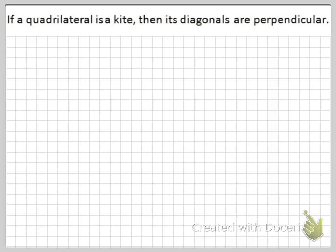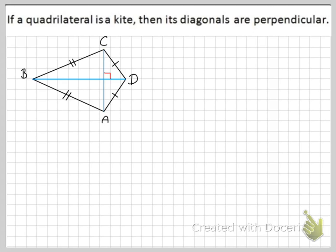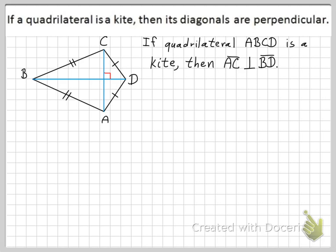A theorem regarding kites: if a quadrilateral is a kite, then its diagonals are perpendicular. In kite ABCD, the diagonals shown in blue are perpendicular to each other, meaning AC is perpendicular to BD.